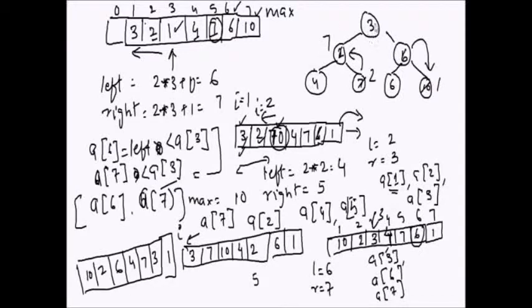Now 3 is at index three, and its children are at indices six and seven. We check if a[3] satisfies the max heap property with a[6] and a[7]. It does not, so we take the maximum of indices six and seven and swap with a[3]. 10 was swapped down to index three, and now 3 is swapped further down. On the next page we draw the complete heap.